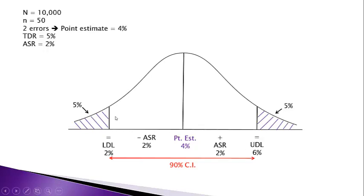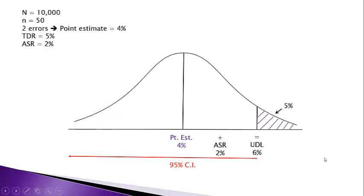In attribute sampling, we normally ignore the lower tail. If the true error rate is lower than we estimate, we're erring on the side of conservatism — that's okay. The real concern is if the true error rate is actually much higher than we predict. So we drop the lower tail, and now we can say we are 95% confident that the true but unknown error rate is 6% or less.